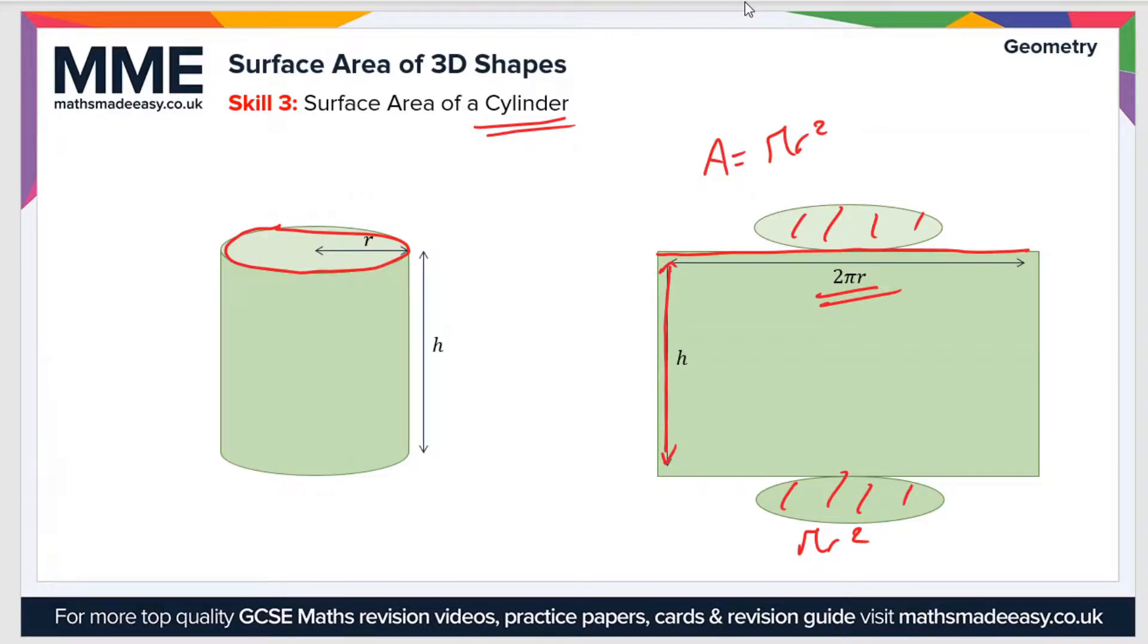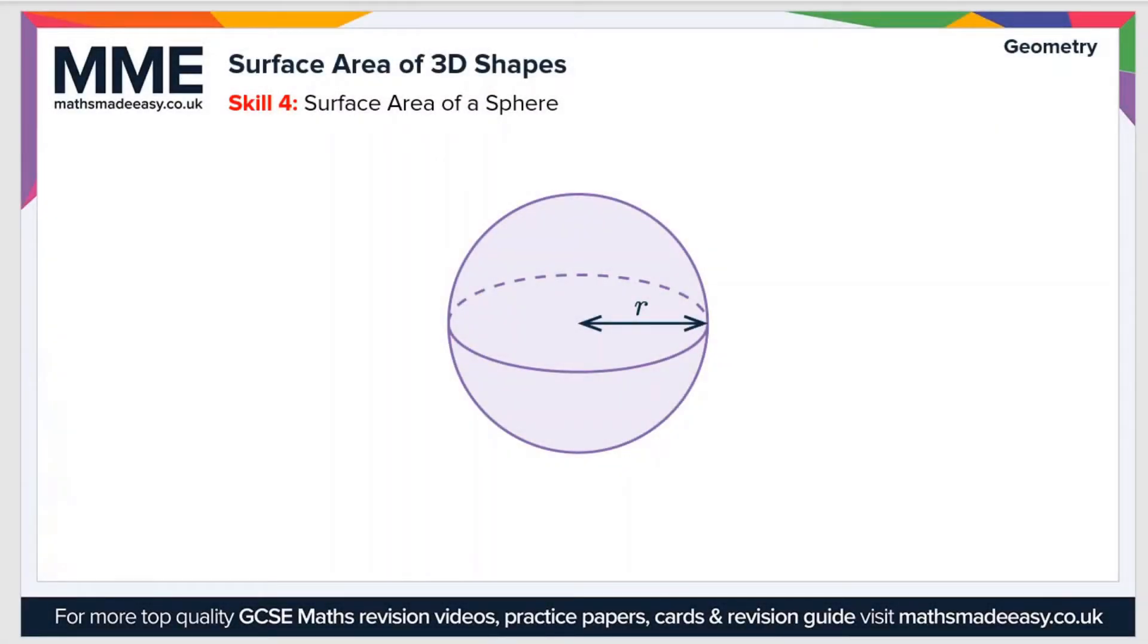So the total surface area of a cylinder is therefore 2πr² because there are two circular faces, plus 2πrh which is the circumference times h. So that gives us 2πr² + 2πrh, and that is the area of a cylinder.